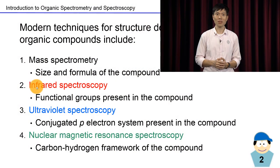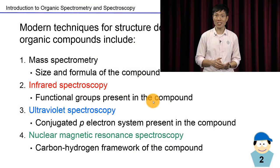There are four main modern techniques for structural determination of organic compounds. Number one, mass spectrometry, which tells us the size and the formula of the compound. Number two, infrared spectroscopy, which informs us the functional group present and absent in the compound.